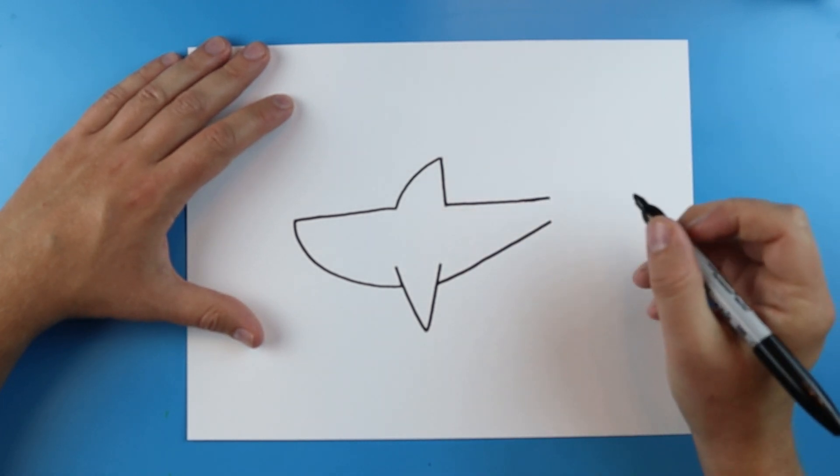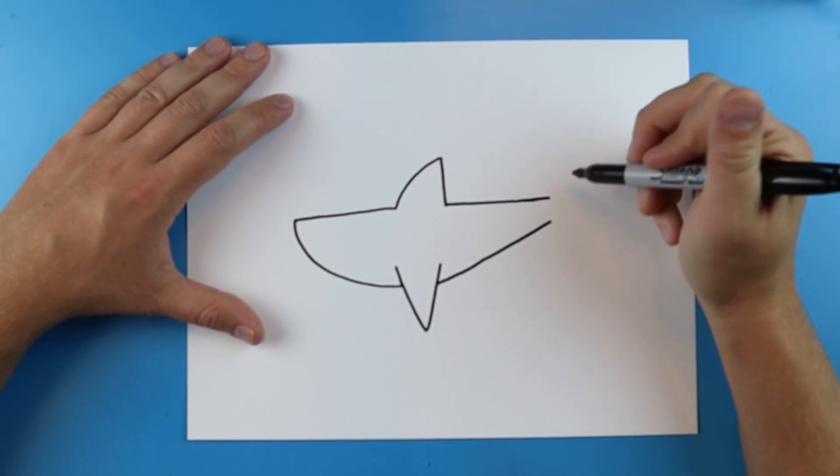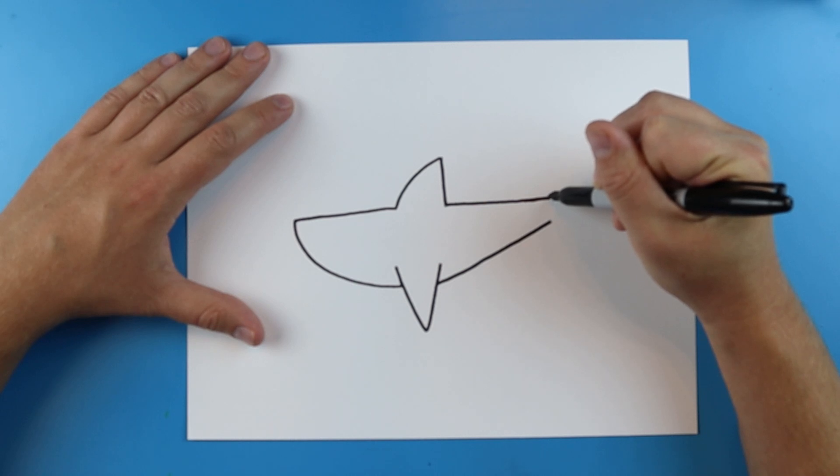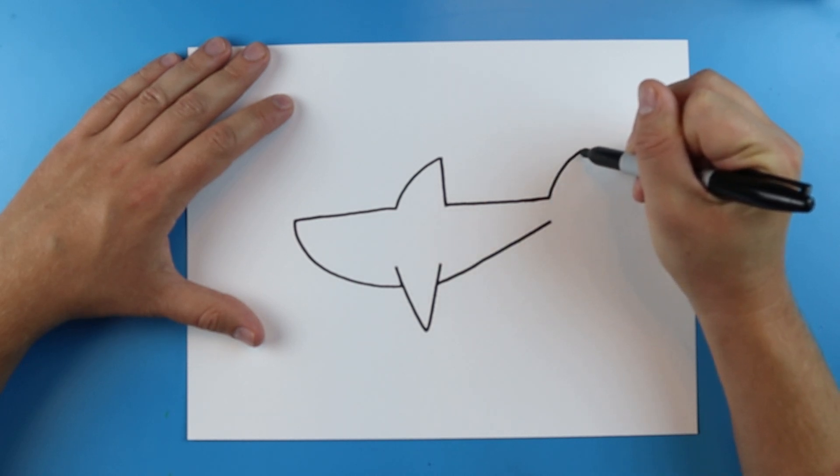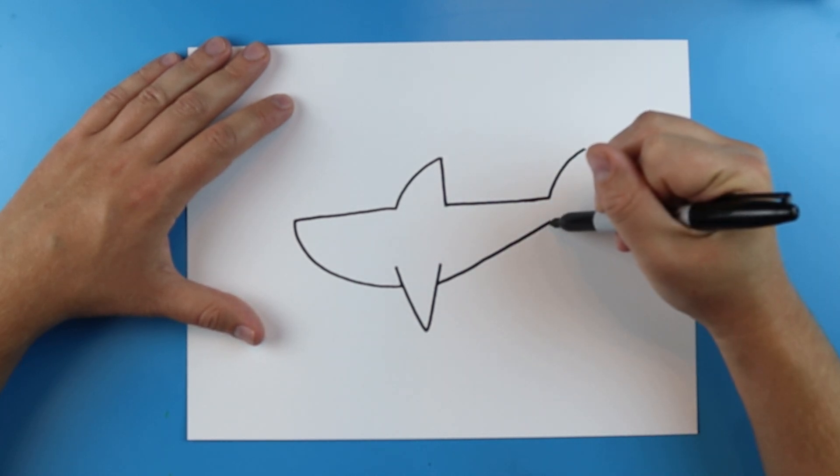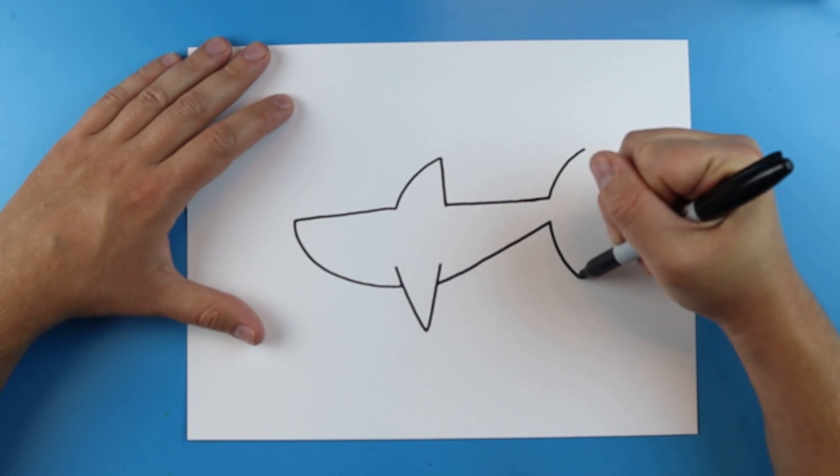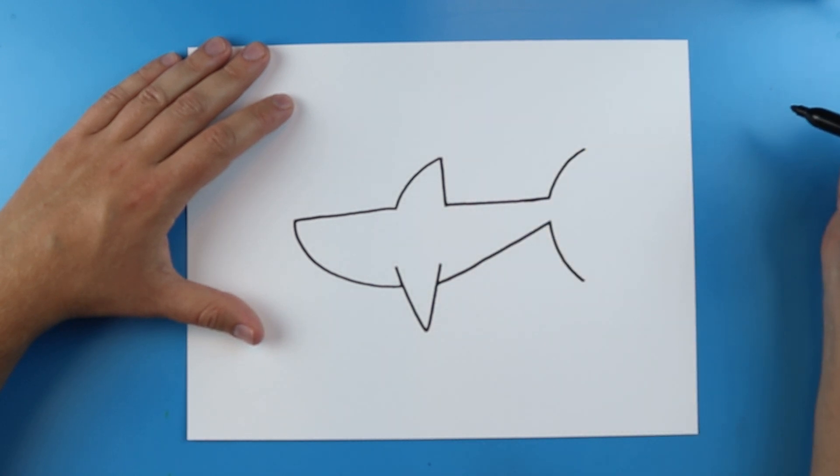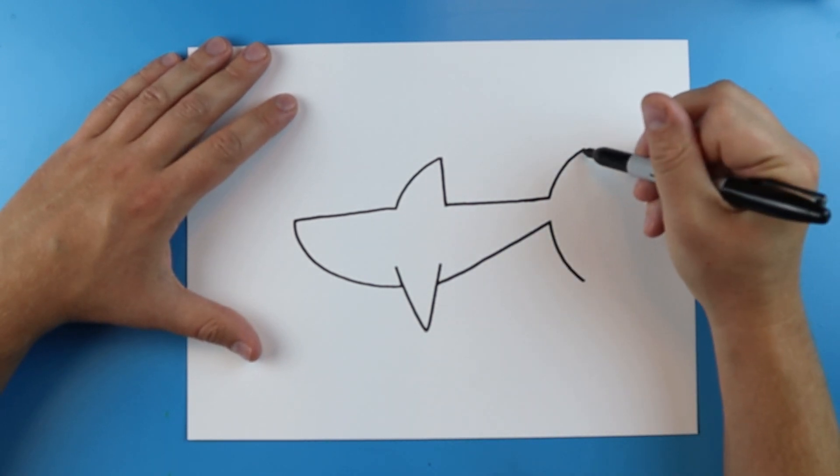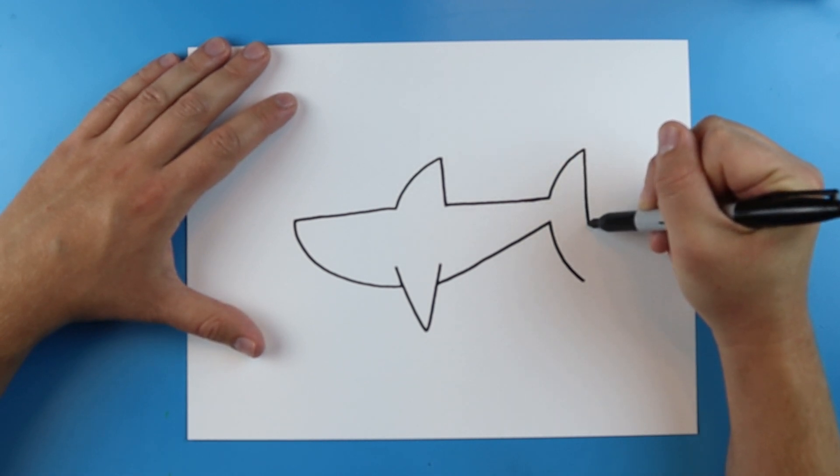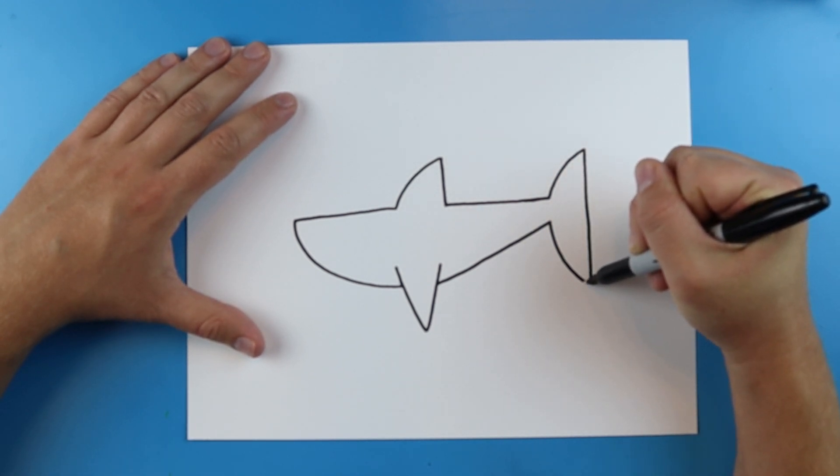When you make the tail, you want to try to make a moon shape. So to do this, draw a line that's going to curve up and then draw another line that curves down. And then just connect it with a nice little straight line.